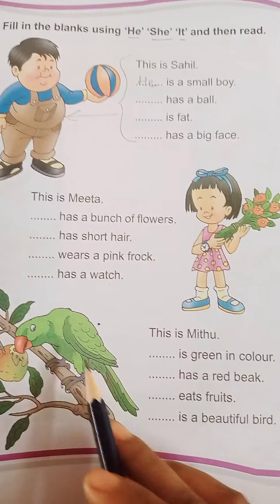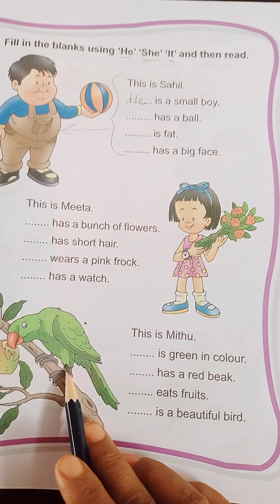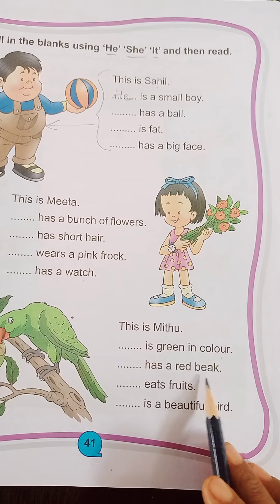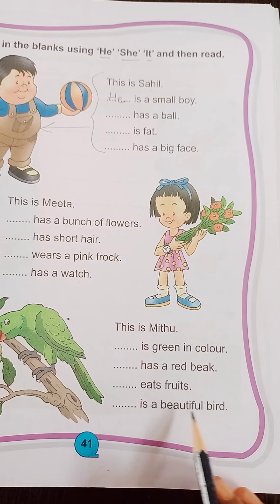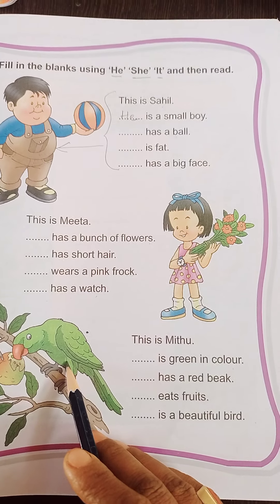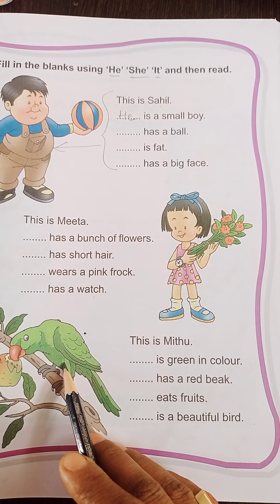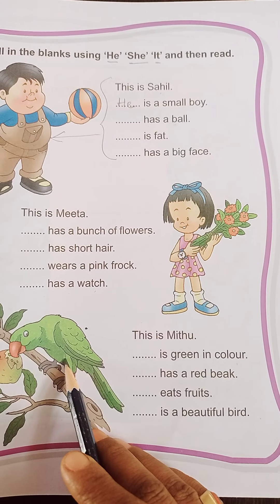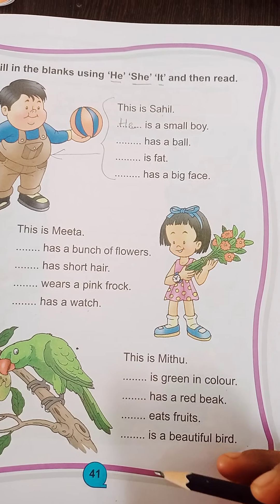Now here is a bird — Mithu. This is Mithu. It is green in color. It has a red beak. It eats fruits. It is a beautiful bird. Birds bhi — aap aage jaoge na, bade bhaiyon ke saath padhoge, aage classes mein jaoge — tab pata chalega. Animals ke andar hi birds aate hain, isi liye birds ke liye hum 'it' use kar rahe hain.